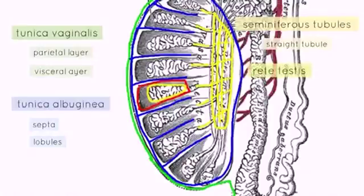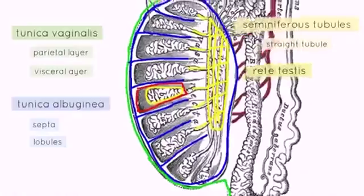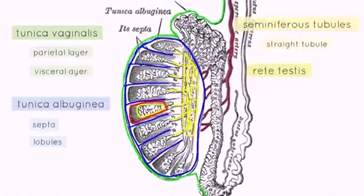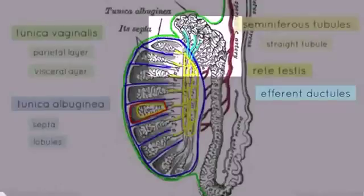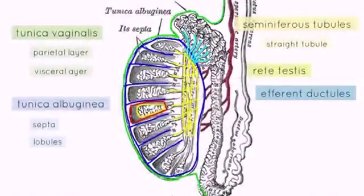In Latin, the word rete means net, so you've got this amalgamation of tubules forming a net-like structure. Next in this series of tubules, coming off the rete testes, you've got the efferent ductules, which connect to the epididymis.